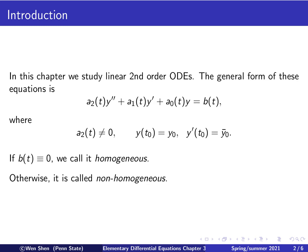The coefficients are labeled a2, a1, a0, where the number corresponds to the order of derivative of the term they are associated with. We need some assumptions to keep this second order — the a2(t) term should not be identically zero.